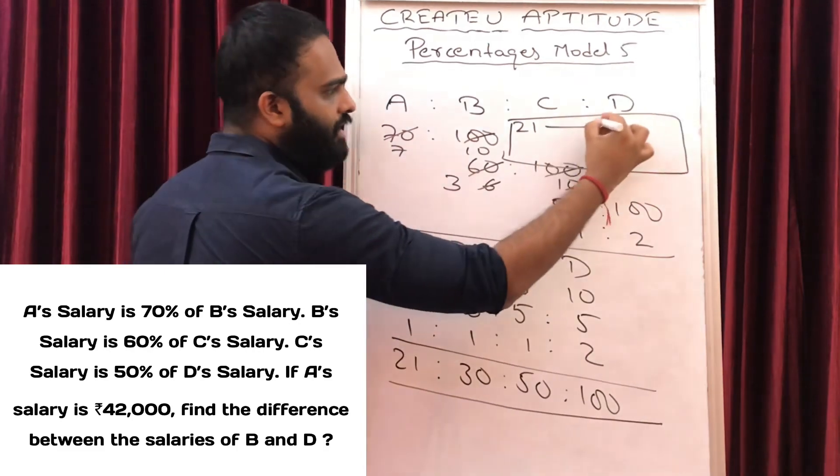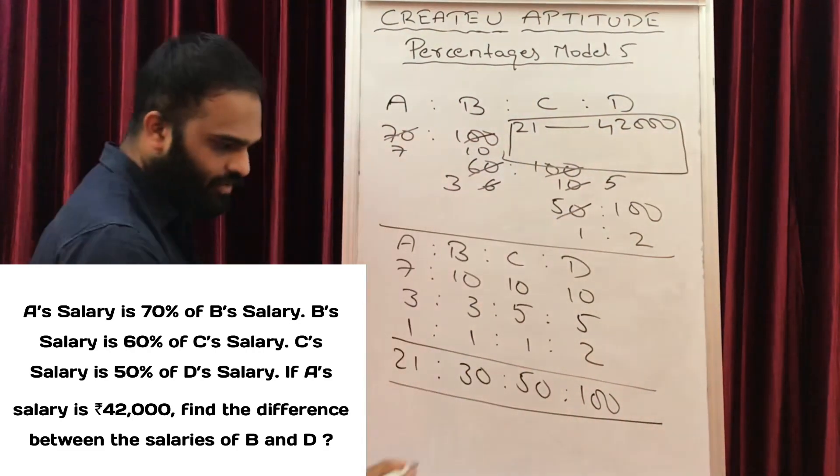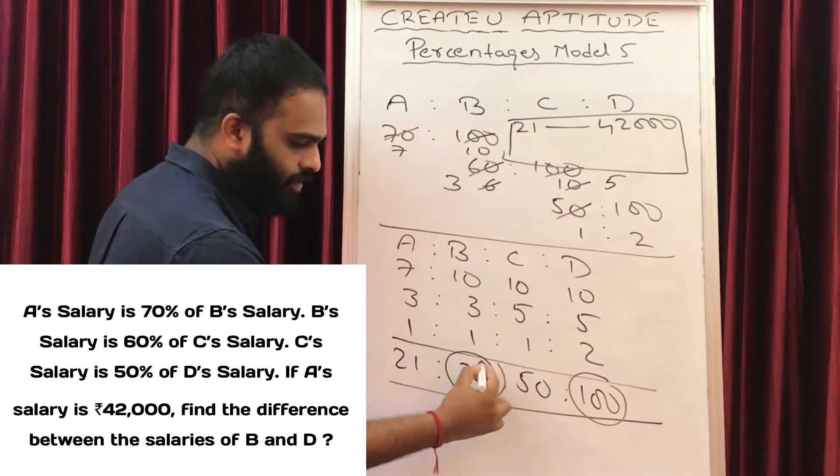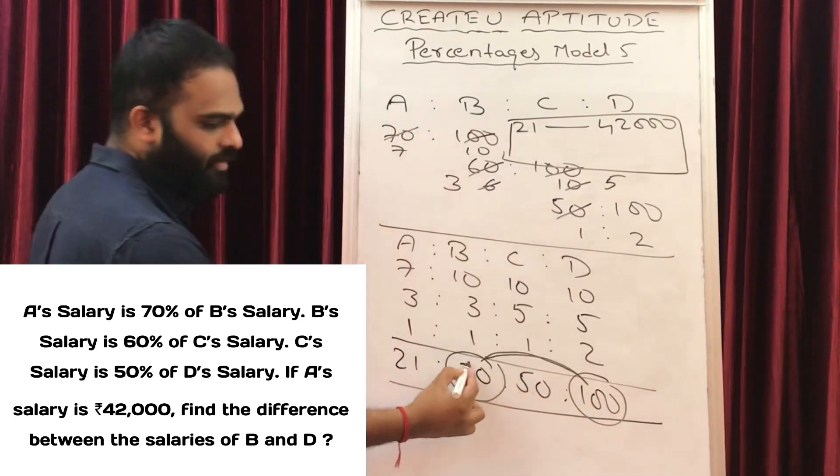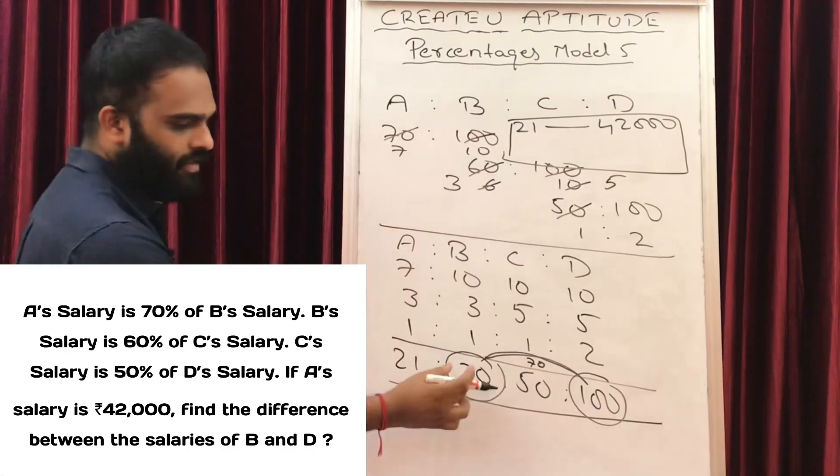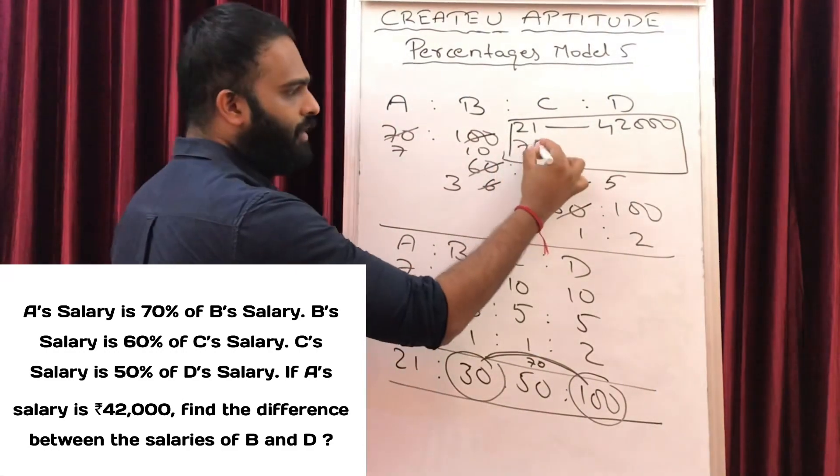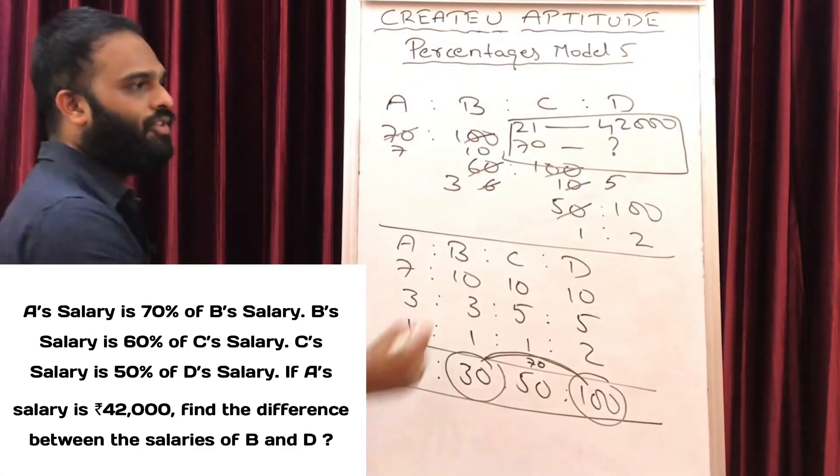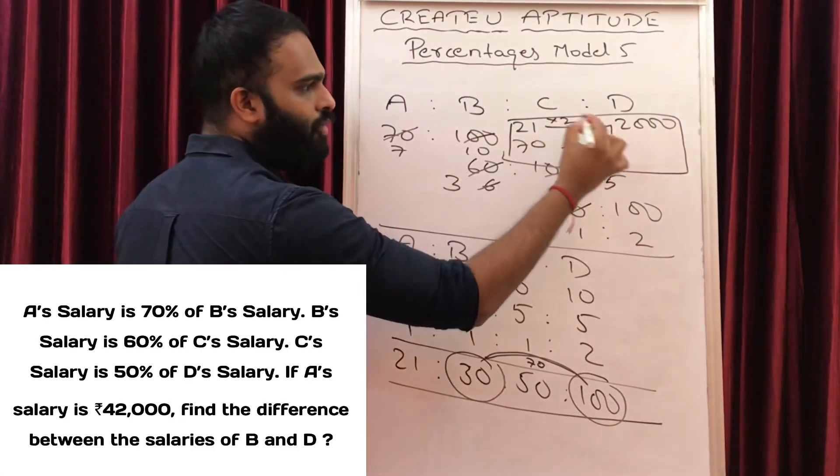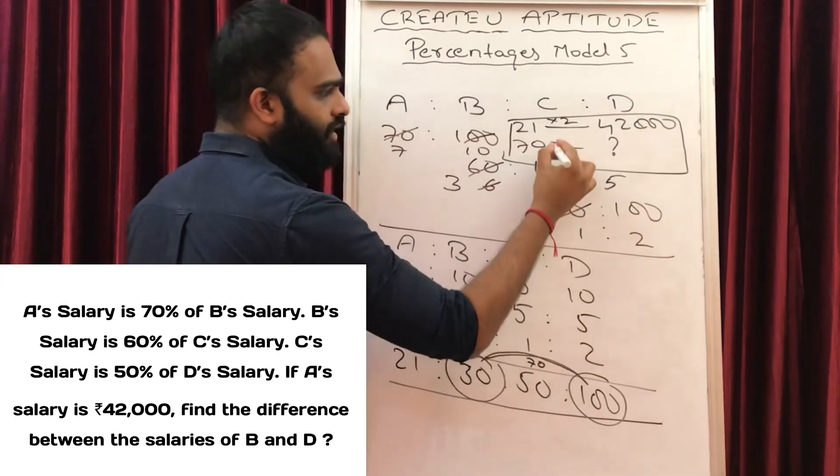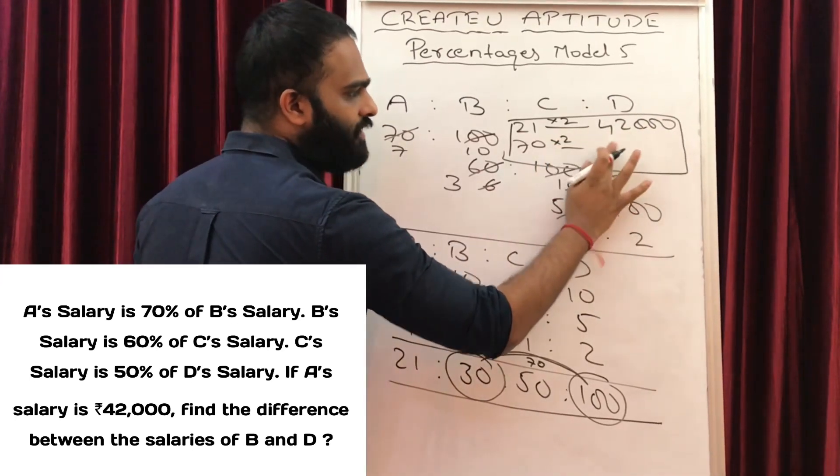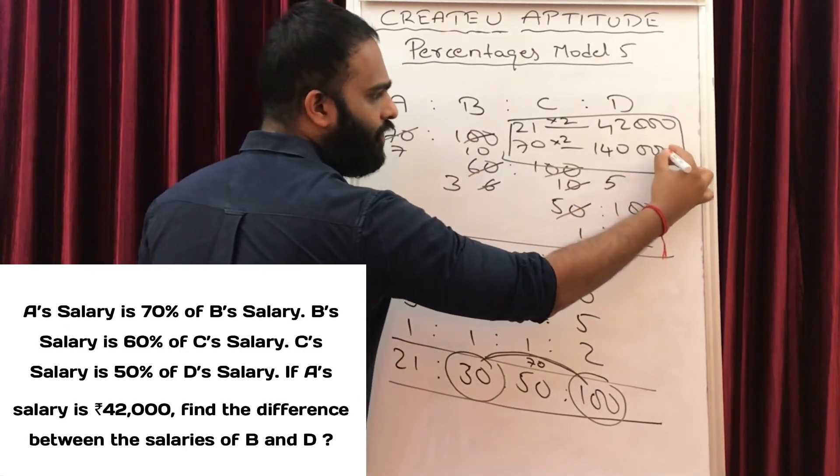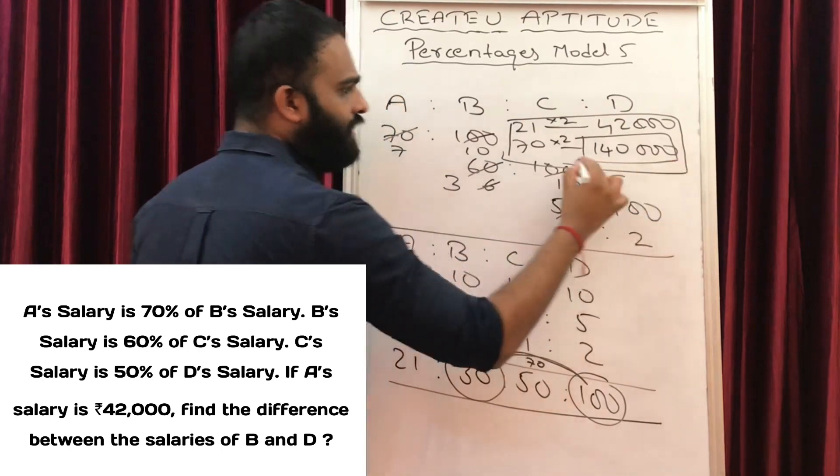A's salary is 42,000. 21 parts are 42,000. We have the difference between the salary of B and D. B and D difference is 70. 30 and 100, so 70 parts. 21 parts are 42,000. 2's are 42,000, 3 zeros extra. 72's are 140,000, 3 zeros extra.